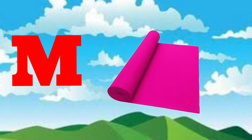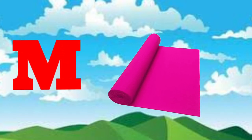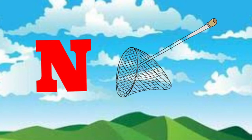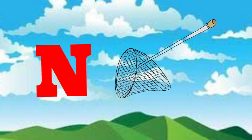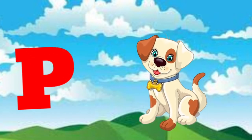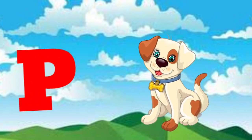M is for mat, m-m-mat. N is for net, n-n-net. O is for orange, o-o-orange. P is for pet, p-p-pet.